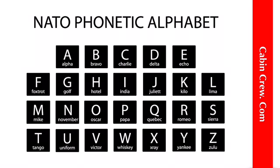A - Alpha, B - Bravo, C - Charlie, D - Delta, E - Echo, F - Foxtrot, G - Golf, H - Hotel, I - India, J - Juliet, K - Kilo, L - Lima, M - Mike, N - November, O - Oscar, P - Papa, Q - Quebec, R - Romeo, S - Sierra, T - Tango, U - Uniform, V - Victor, W - Whiskey, X - X-Ray, Y - Yankee, Z - Zulu.